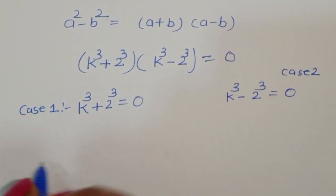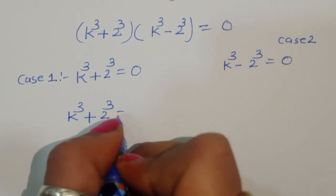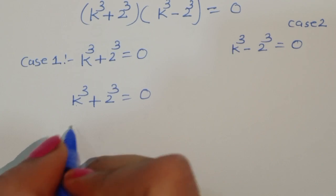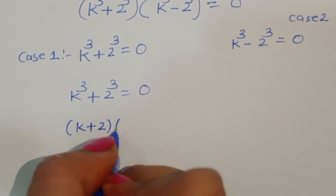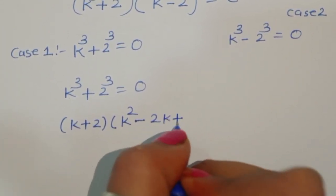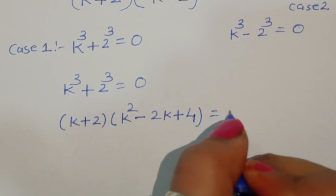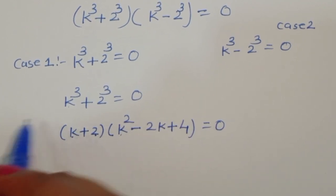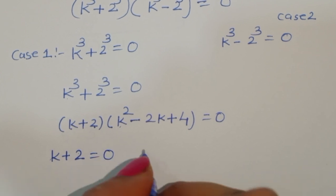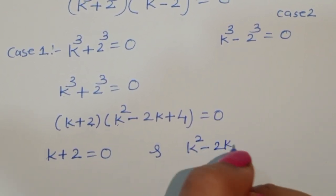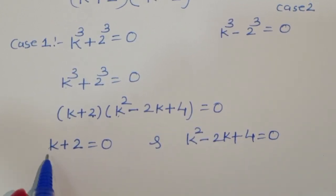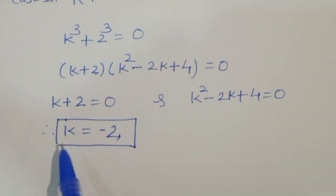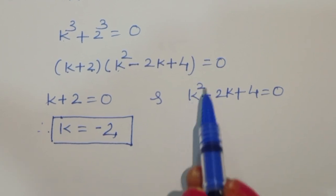According to Case 1, k^3 + 2^3 = 0. Applying the formula for a^3 + b^3, we get (k+2)(k^2 - 2k + 4) = 0. This gives two equations: k + 2 = 0, and k^2 - 2k + 4 = 0. From the first equation, k = -2.